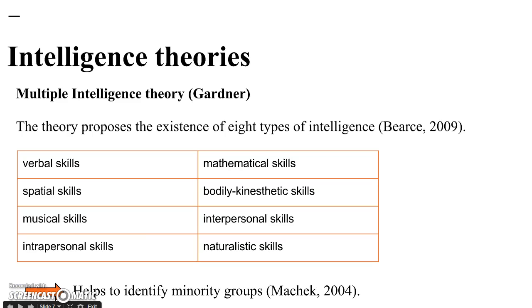One of the principal intelligence theories is the Multiple Intelligence Theory by Gardner. Gardner proposed the existence of eight types of intelligence, which are related to the way in which the individual decides to learn and how they process information. Gardner defined the types of intelligence as follows: Verbal skills are the ability to think in words and use language to express meaning. Spatial skills is the ability to think three-dimensionally.